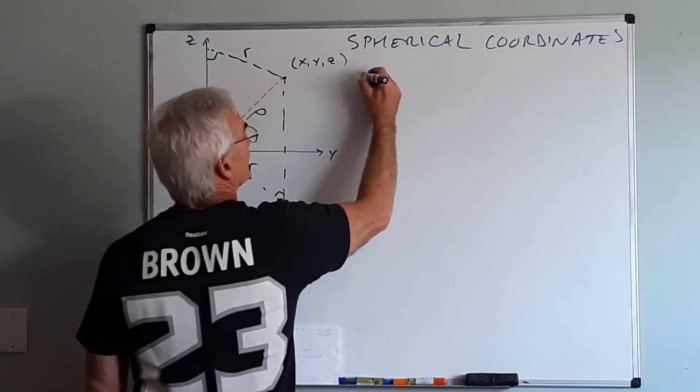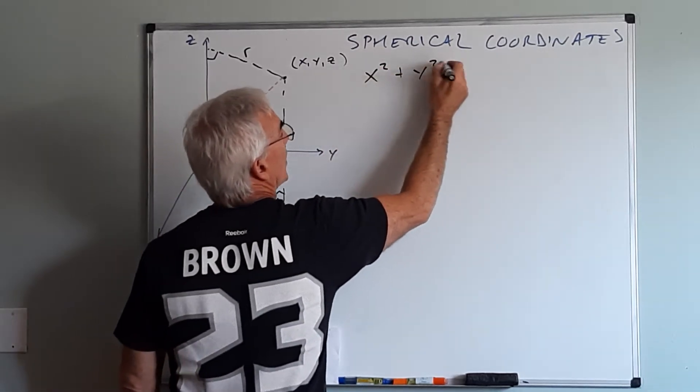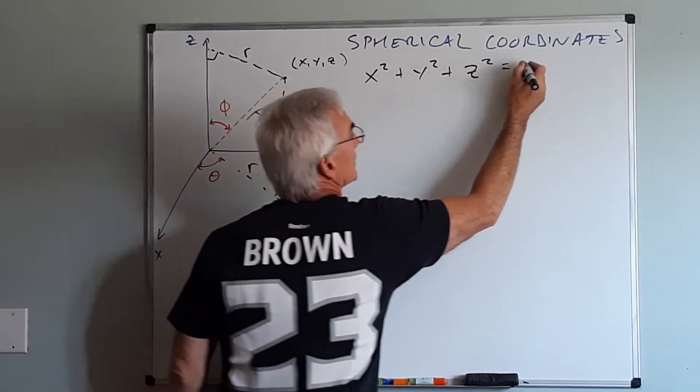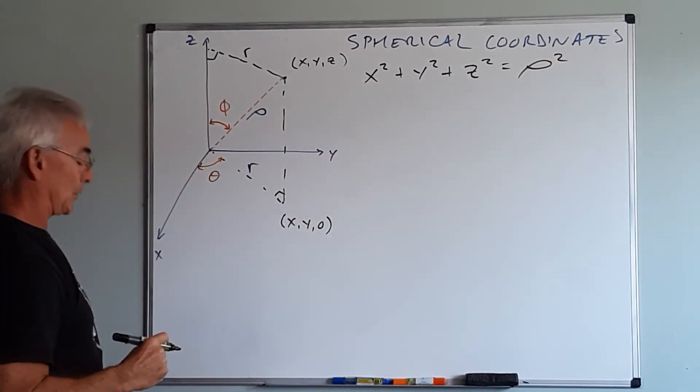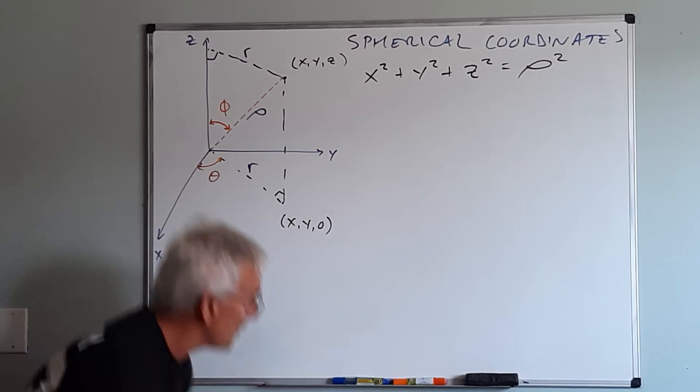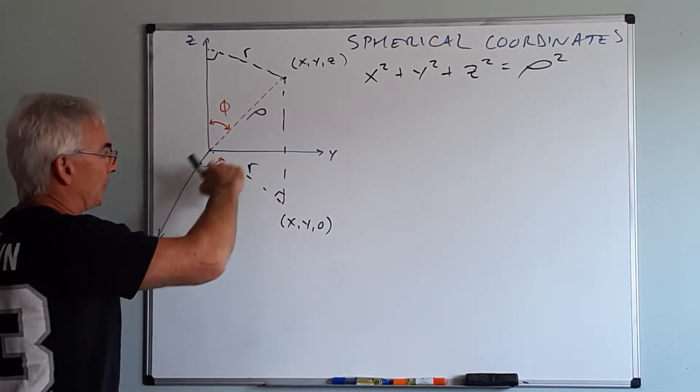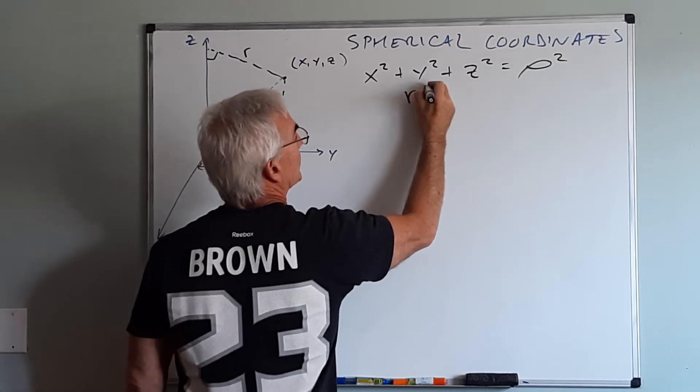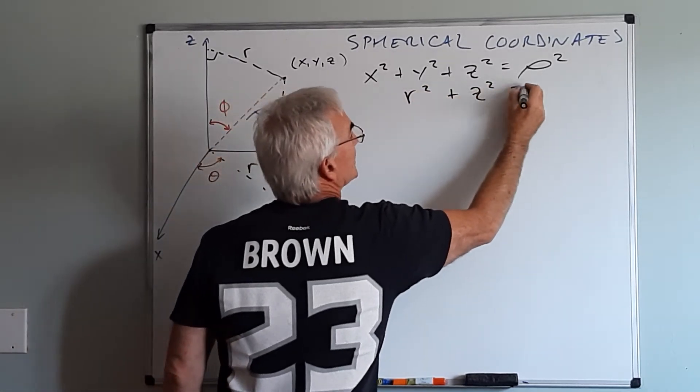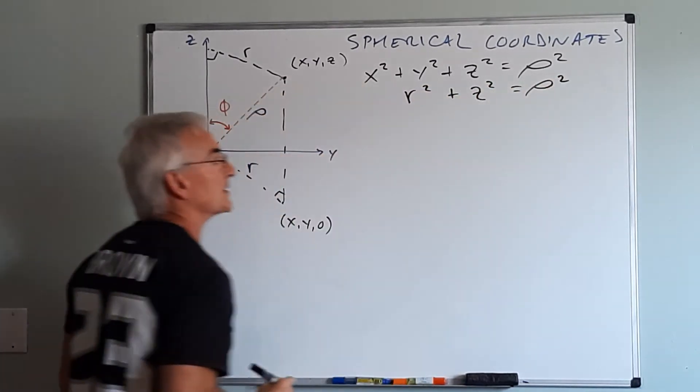So let's start with the obvious and that's that x squared plus y squared plus z squared equals rho squared. Our three-dimensional Pythagorean theorem. Because we already know on the xy plane x squared plus y squared equals R squared, this can also be written then as R squared plus z squared is rho squared.